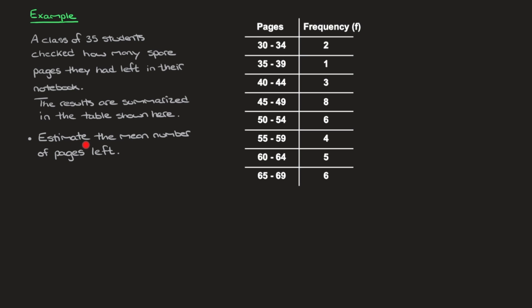We're then asked to estimate the mean number of pages left. Looking at the frequency table, we can see that there were two students who had anything between 30 and 34 pages left, one student who fell between 35 and 39 pages left, three students who had between 40 and 44 pages left, and so on. To calculate the mean, the first thing we need to do is add a mid-value column to our table.